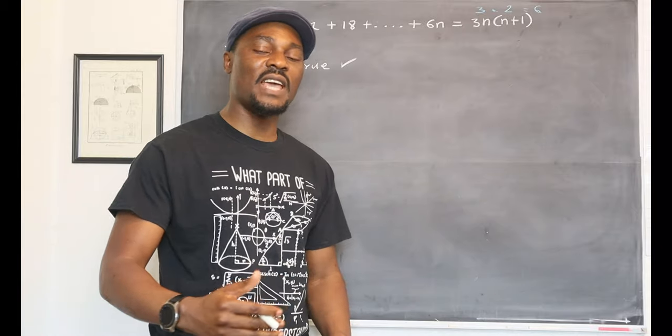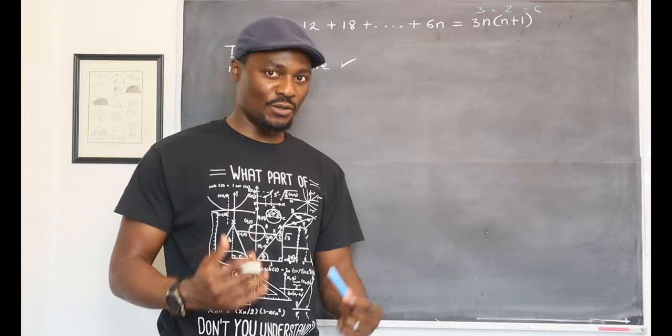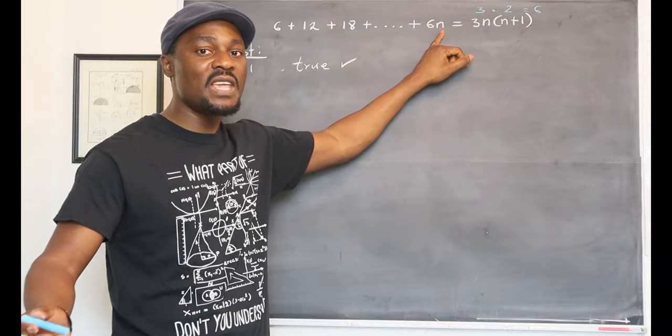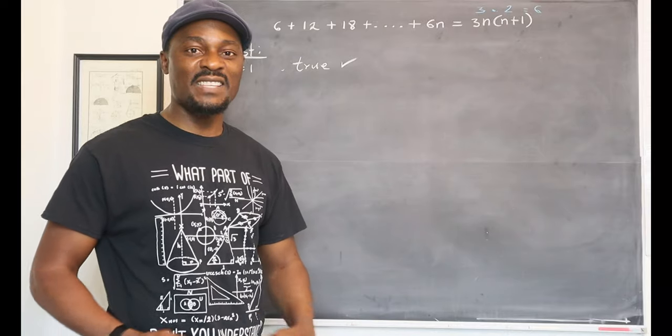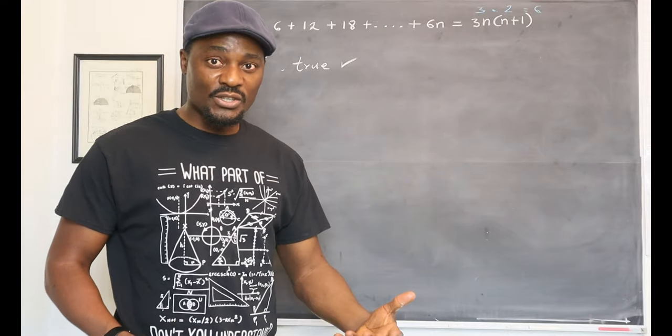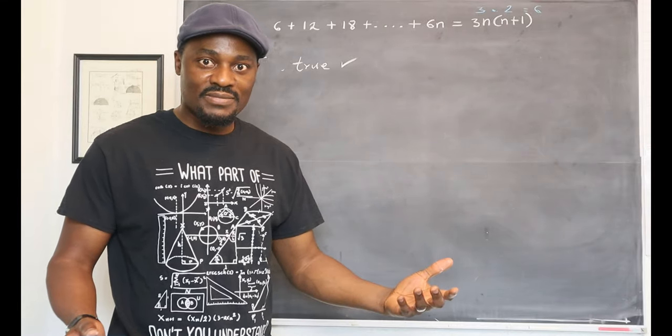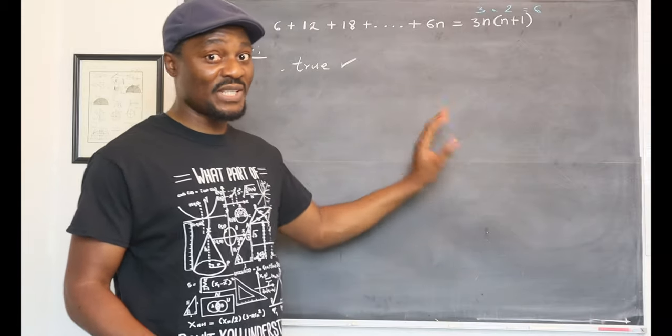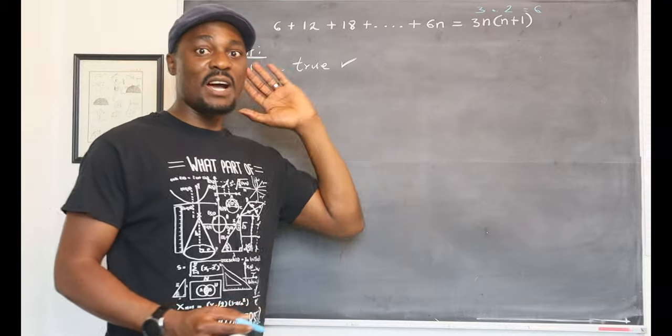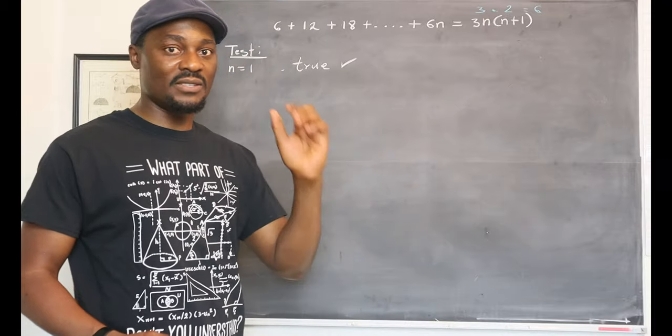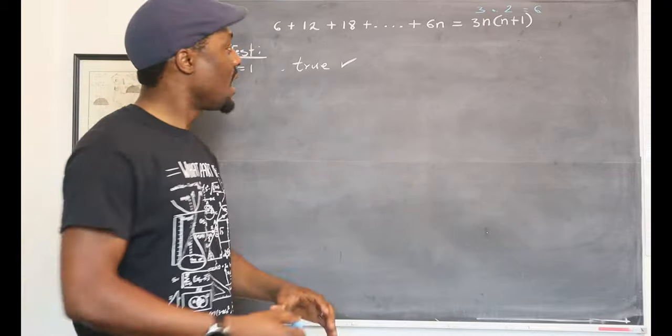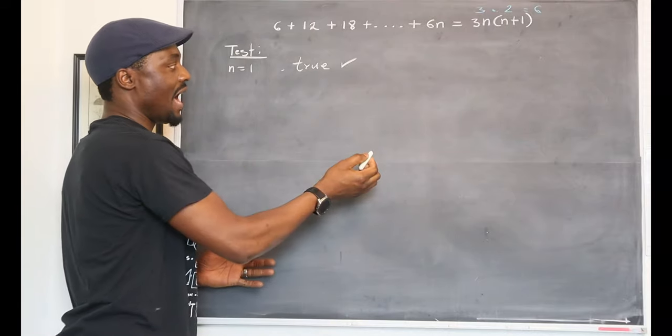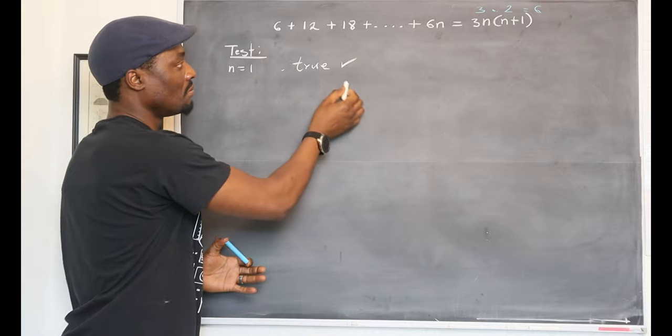The next step you want to take is say, I'm going to assume that I don't know what this n is. I don't know whether it's 1 or 2 or 3, but I'm going to just assume that it's an integer k. Remember, we're dealing with natural numbers, so your numbers can't be negative. It has to be a positive integer, which are called natural numbers.